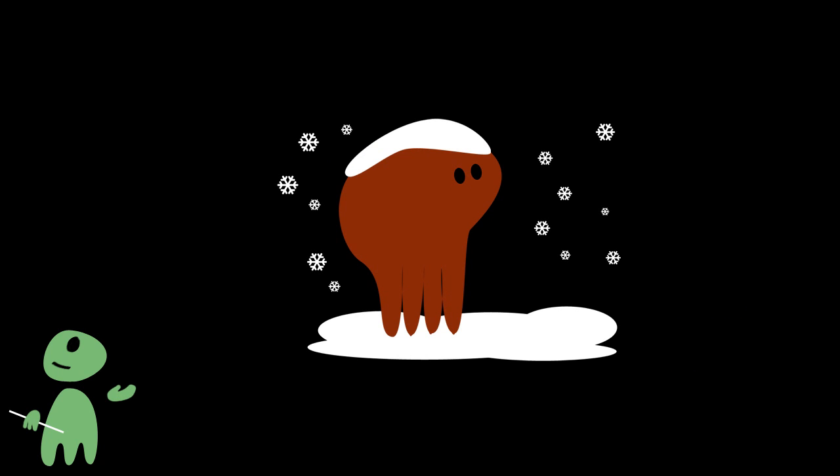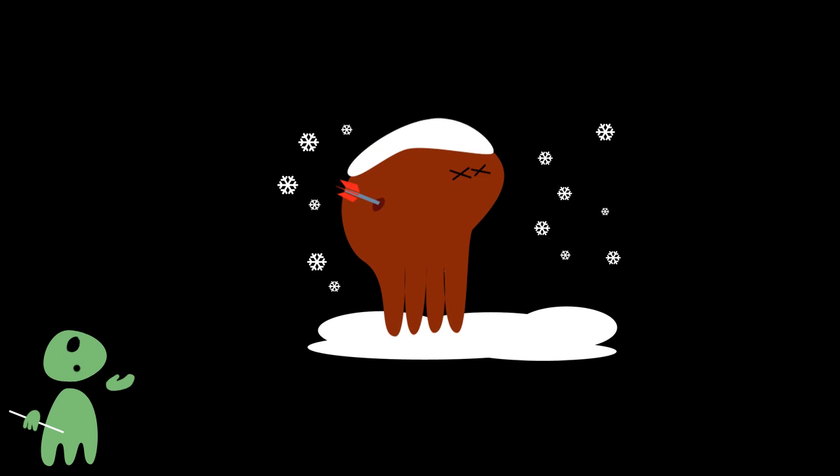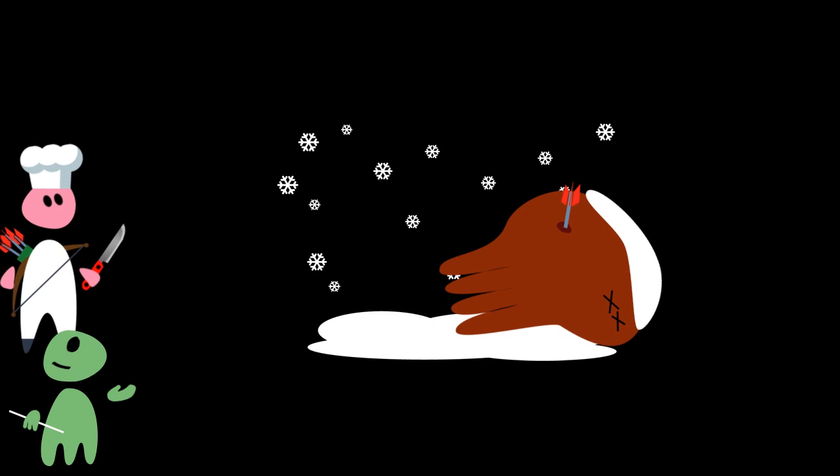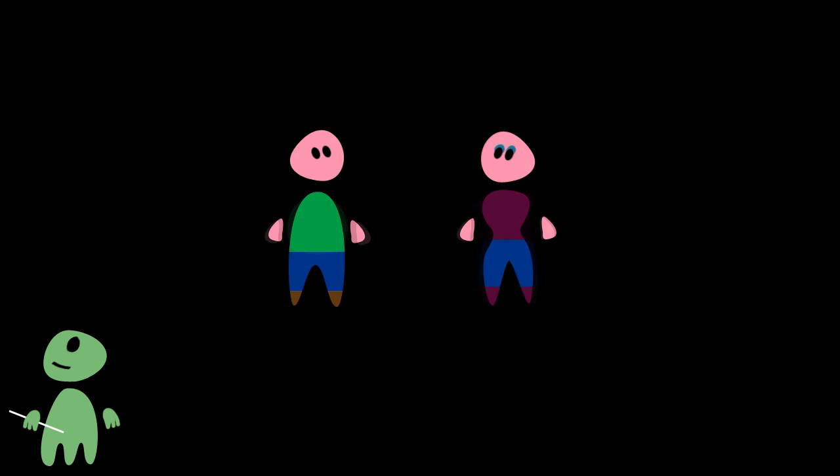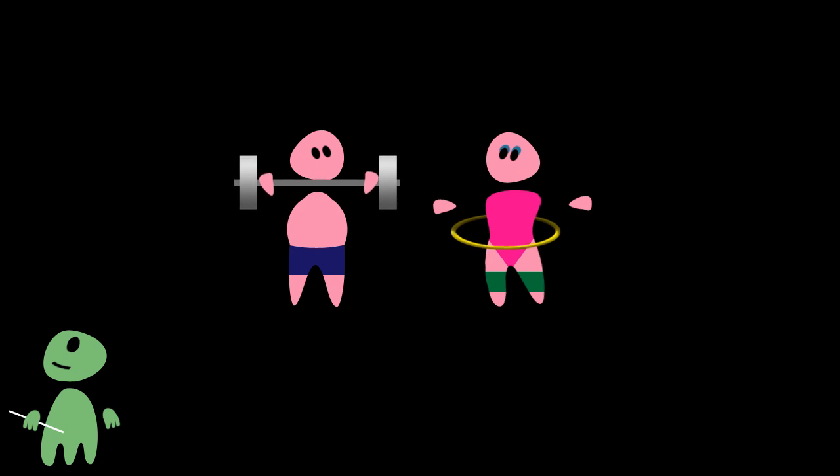Anyway, creatures use fat principally to store energy, for example to survive the cold season when food is rare. Predators, and earthlings in particular, love eating fat from other creatures. In rich countries, people have nowadays so much to eat that they often accumulate too much fat.